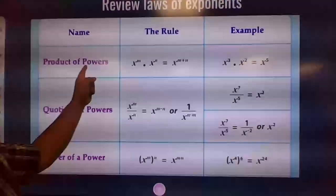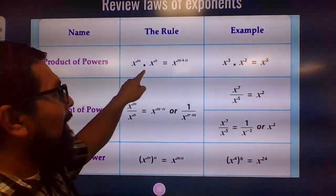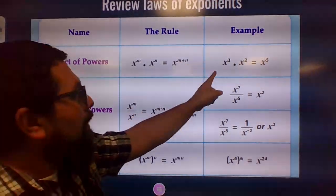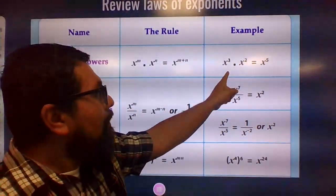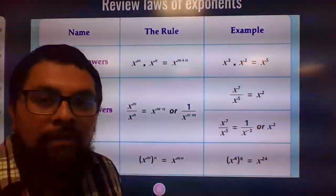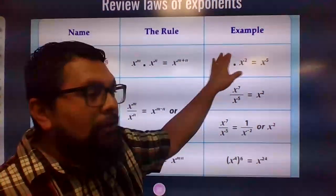The first one is the product of powers. So anytime you multiply two powers like this and they have the same base, you add the exponents. So here's an example. X to the power of three times X squared equals X to the fifth. Notice how three plus two is X to the fifth. We did this already.